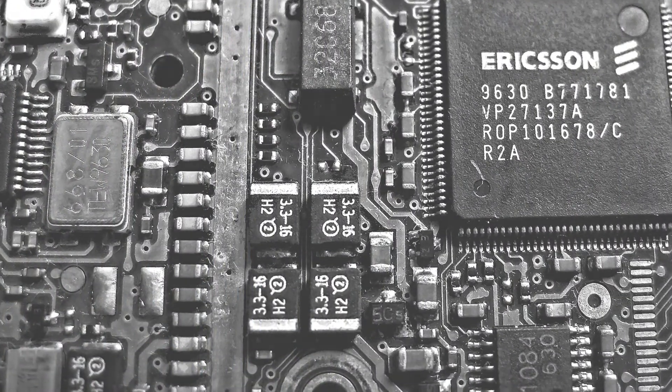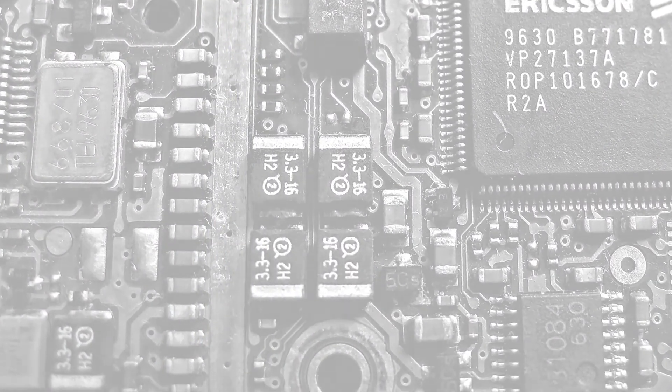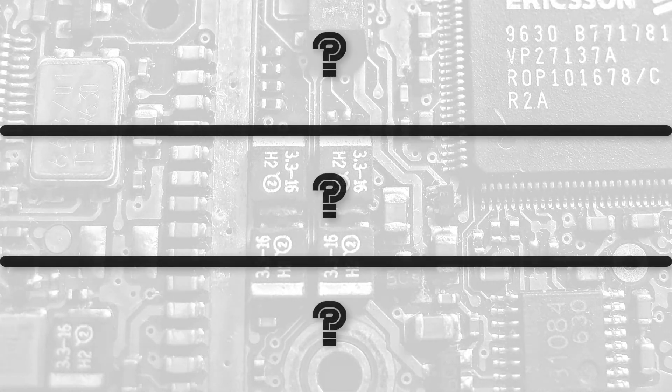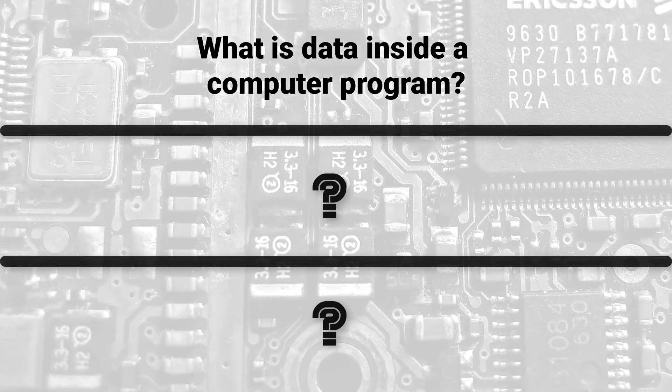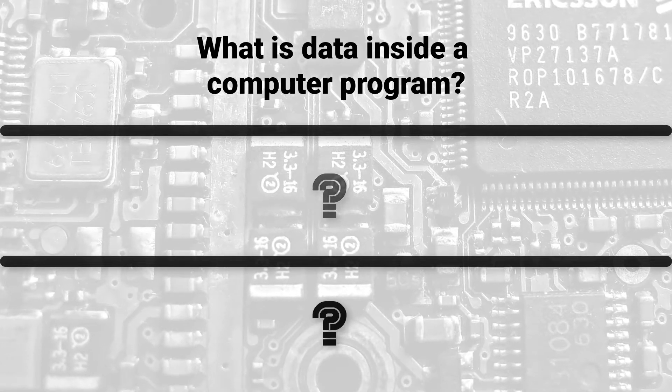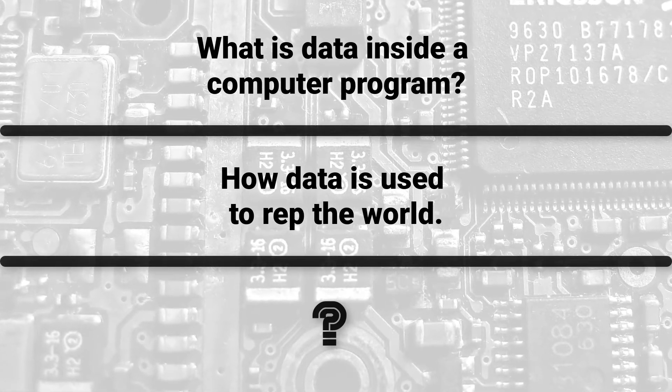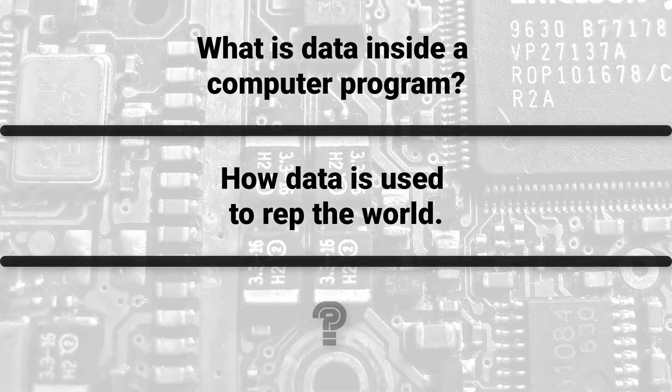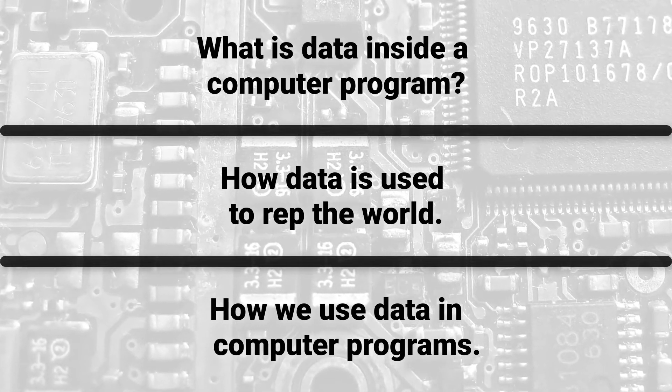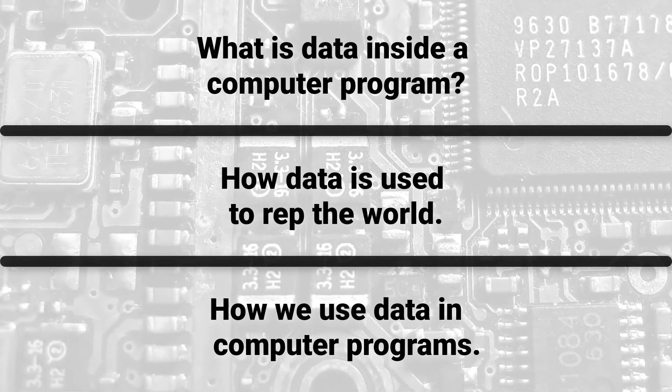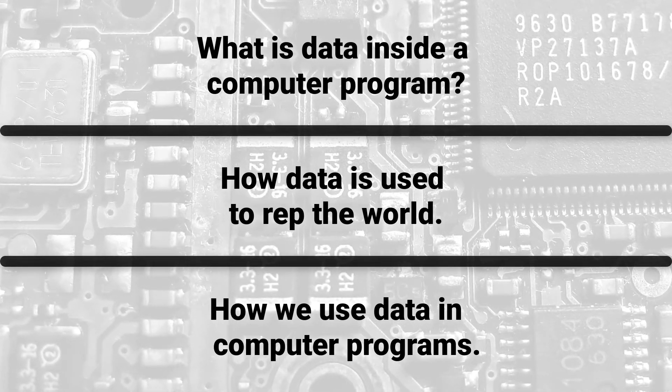Understanding data is a primary skill when it comes to computer programming. This discussion is all about data. We will kick things off by looking at what data actually is inside computer programs, then we will see how data is used to represent the world, and once we know how data is used to rep the world, we'll look at how data is used to bring the world into our computer programs. After we know how this is done, we'll have the building blocks needed to understand how the world is represented inside computer programs.